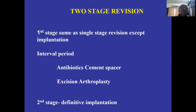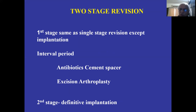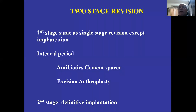Two stage has now become almost like the gold standard. The first stage is the same as a revision, except we are not going to put an implant. Debride, take out implants, biofilm, screws, everything. During the interval period, either keep as excision arthroplasty with traction, or put an antibiotic spacer. The second stage is definitely after three to six months.